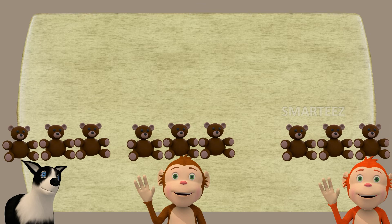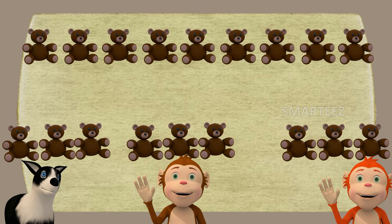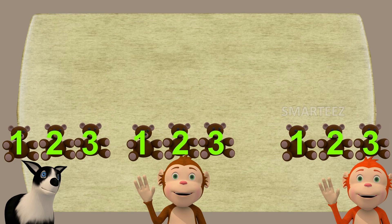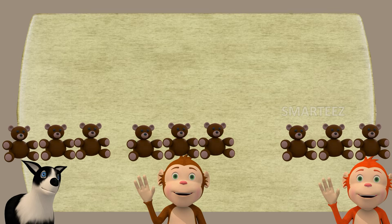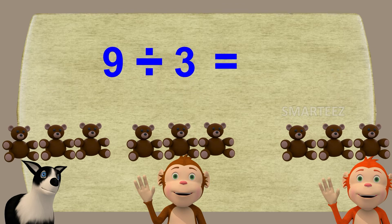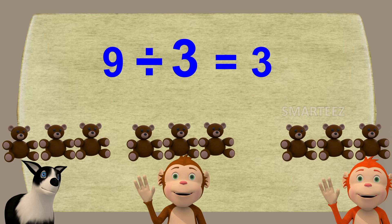That's it, we're done. I split 9 teddy bears among the 3 of you, and you got 3 teddy bears each. When we split 9 teddy bears between 3 people, each one gets 3 teddy bears. Here we can say 9 divided by 3 is 3.